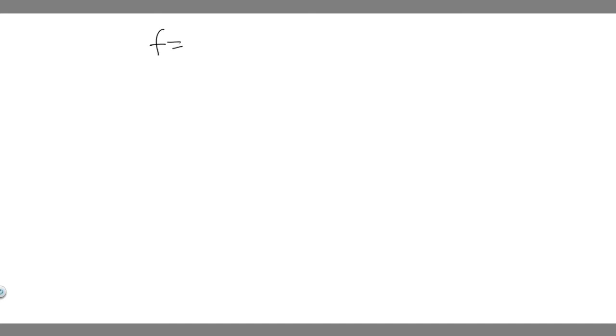In order to solve this problem, what we're going to want to do is relate these different variables. You need to know the formula for frequency, which is: frequency equals 1 over 2 pi times the square root of k over m.